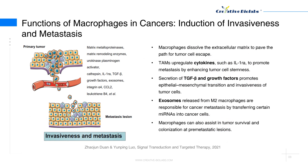Induction of invasiveness and metastasis: Macrophages can not only increase the density of blood vessels but also promote the invasiveness and metastasis of tumor cells. By expressing matrix metalloproteinases, cathepsin, urokinase plasminogen activator, and matrix remodeling enzymes such as lysyl oxidase and osteonectin, macrophages dissolve the extracellular matrix to pave the path for tumor-cell escape. Tumor-associated macrophages upregulate cytokines such as IL-1RA to promote metastasis by enhancing tumor cell stemness.